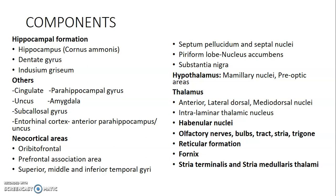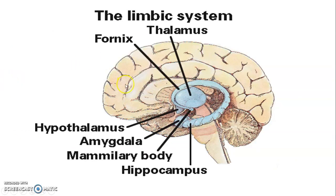So we have various cortical and subcortical parts that form components of the limbic system. That's the hypothalamus and the thalamus. This here is the amygdala, then the hippocampus, and then that's the fornix. This is the thalamus. Remember the mammillary bodies that are part of the hypothalamus. Then we have the septum pellucidum here. Remember this is our cingulate gyrus — it has the cingulum which is also part of the limbic system.